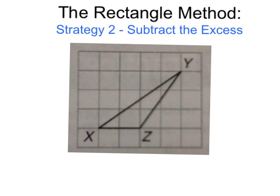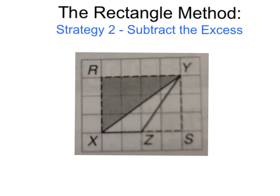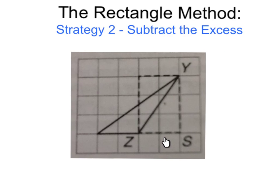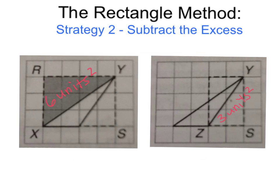The area remaining will be the area of the original figure. Here you can see triangle X, Y, Z encased in rectangle X, R, Y, S. The area of this rectangle is twelve square units. The shaded region is a right triangle that is half of the rectangular region, so its area is six square units. Now we're going to draw another rectangle to find the area of the rest of the figure. The area of this rectangle is six square units. This region is again a right triangle that is half of the rectangular region, so its area is three square units.